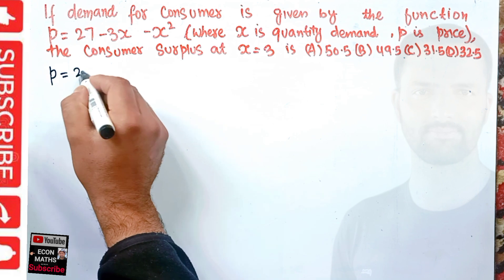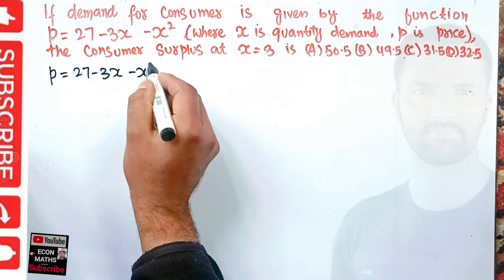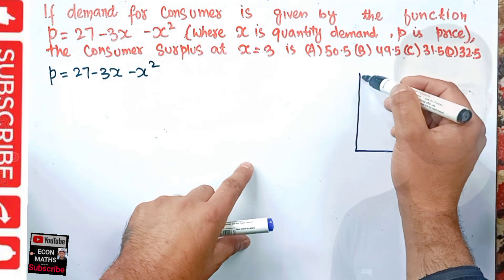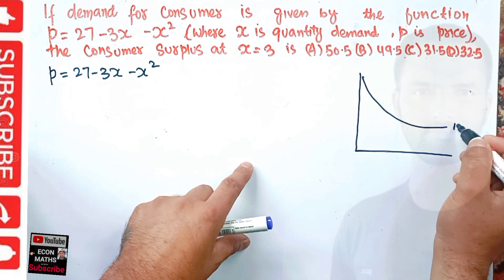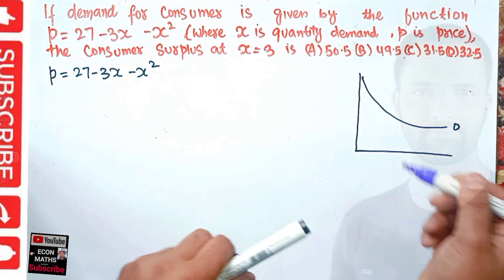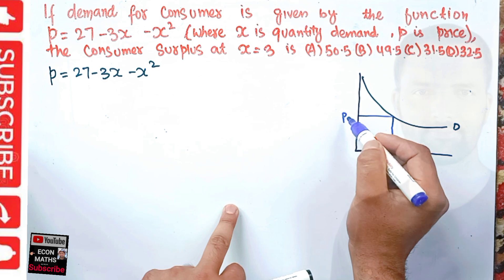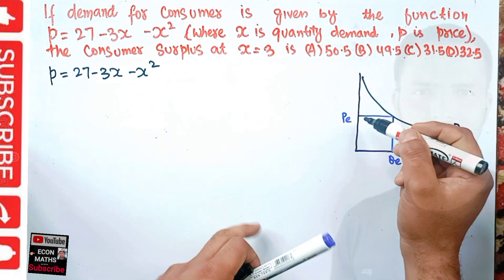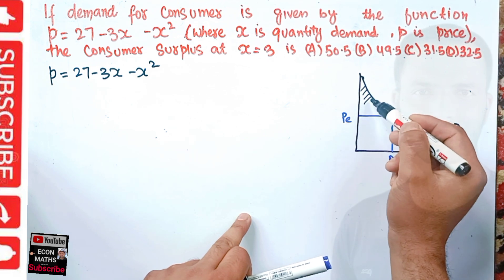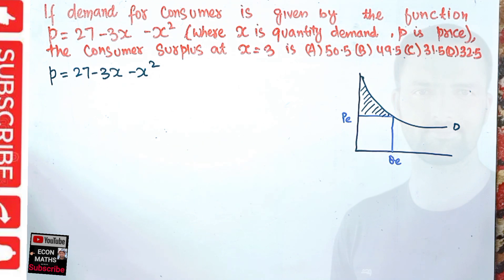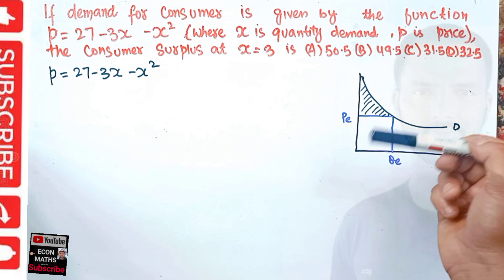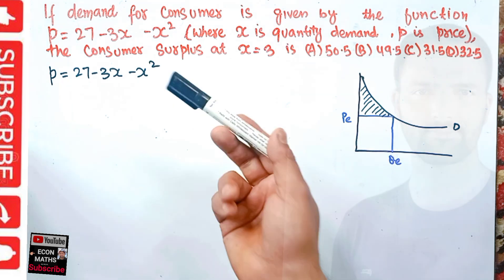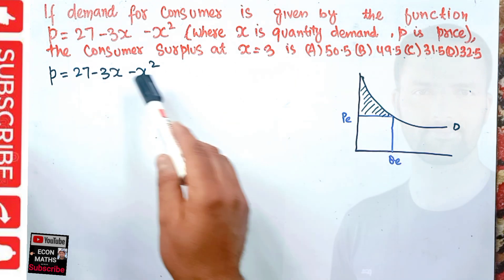Graphically, since we have a nonlinear demand function, we draw this type of demand curve. The consumer surplus is simply the area which lies above the equilibrium price and below the demand curve. If we were dealing with a linear demand function, we could use the graphical method, but since we have a nonlinear demand function, that would be very complex.